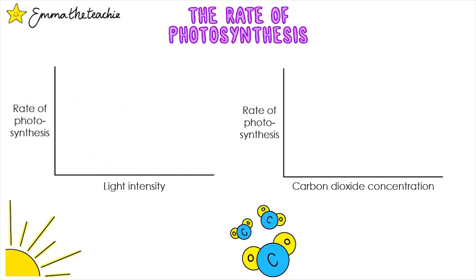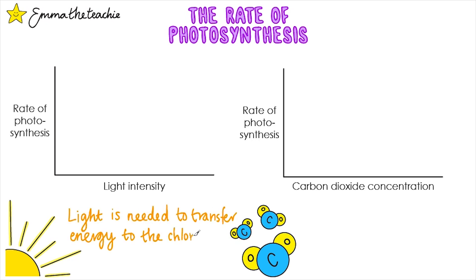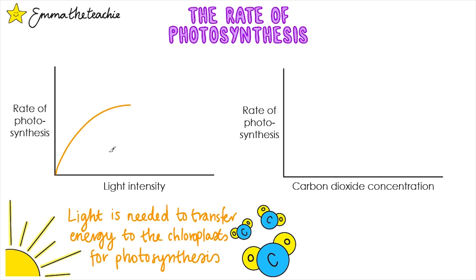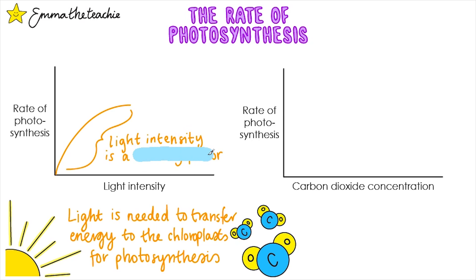One factor that can affect the rate of photosynthesis is light intensity. In the previous video we learned that photosynthesis is an endothermic reaction, so light is needed to transfer energy to the chloroplasts for photosynthesis to occur. It makes sense then that the higher the light intensity, the faster the rate of photosynthesis. This doesn't increase at a steady rate so the line is a curve. Because the rate increases as we increase the light intensity, it means that light was limiting at the lower intensities, so we call light a limiting factor at these points. That's an important phrase to learn and all of the other factors we're going to look at are also limiting factors.